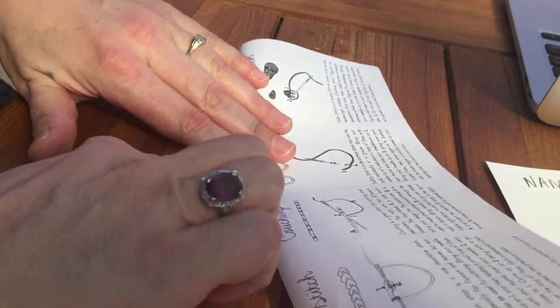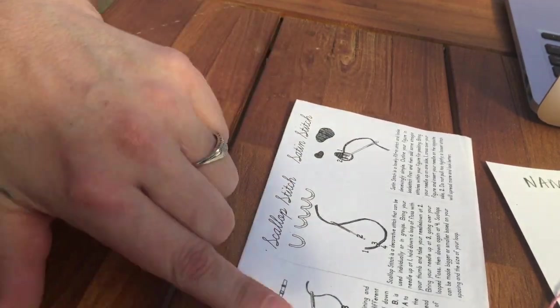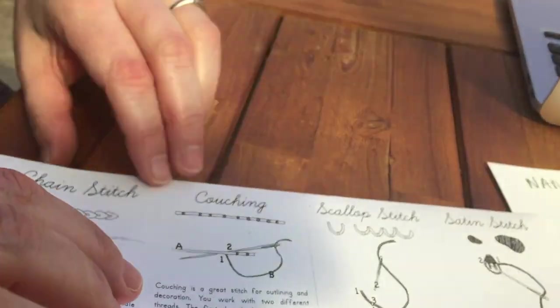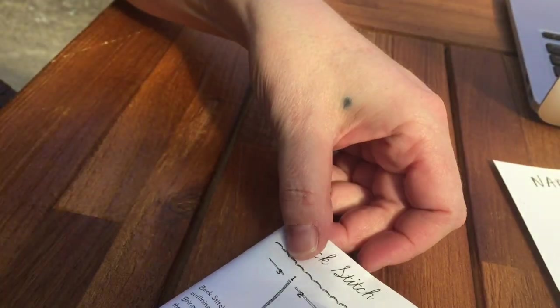You can see this is the cover of the book—it's a pocket guide, so it's meant to be small and fit in your pocket. You'll see that there are some of the stitches that we're going to learn, with the directions and pictures right here for you.